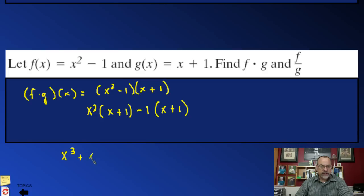x squared times 1 is x squared. Negative 1 times x is negative x, and then negative 1 times 1 is negative 1. There are no like terms, so this would be f times g of x.